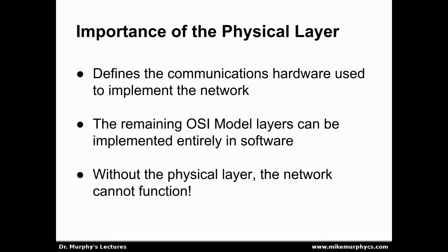This layer defines the communications hardware that's going to be used to implement the network. Every other layer of the OSI model can be implemented on top of it, and moreover, every other layer can technically be implemented entirely in software. Software needs some kind of hardware on which to run, and the physical layer provides that hardware and allows the network to function.